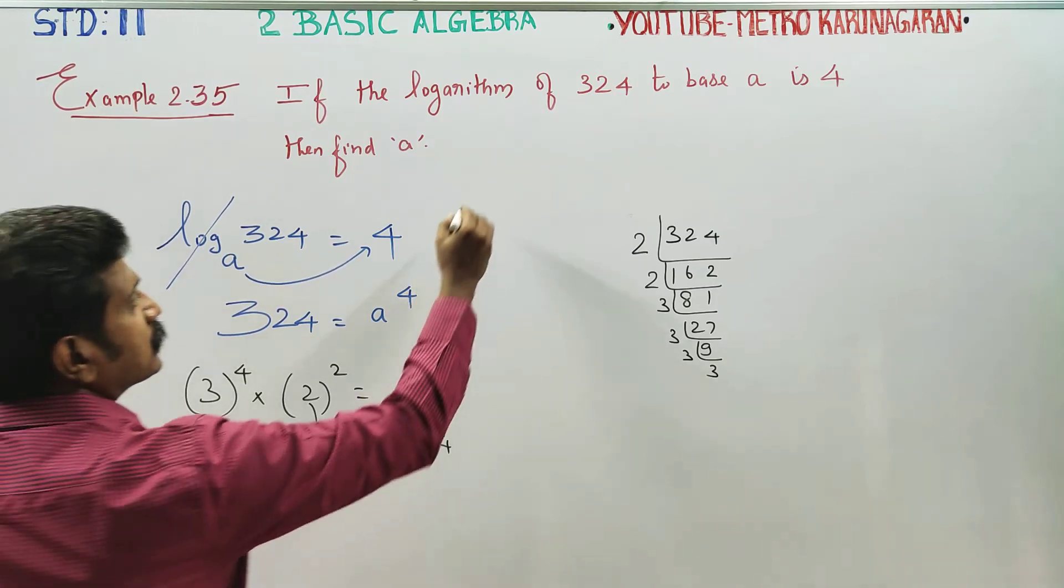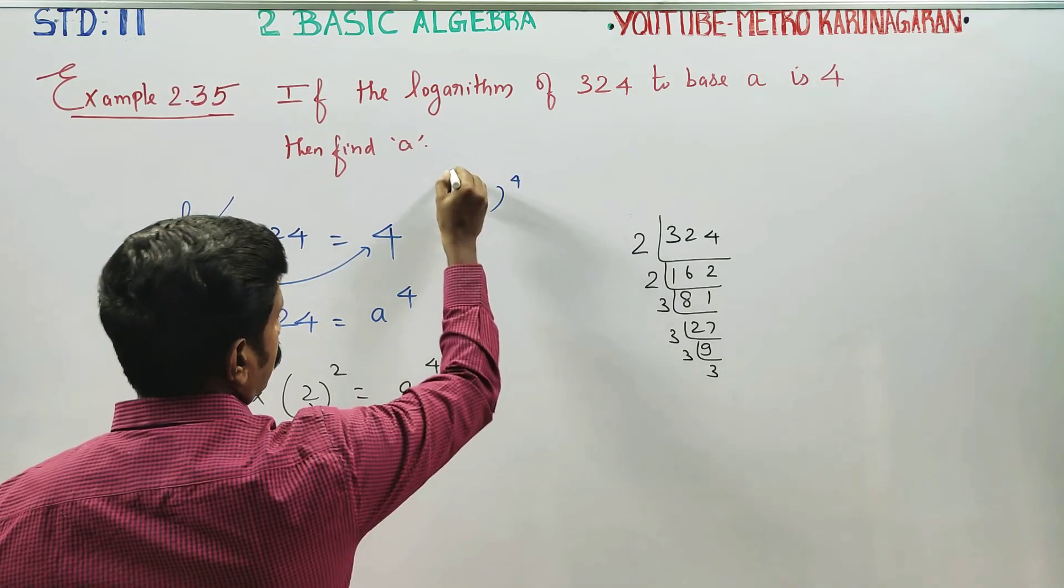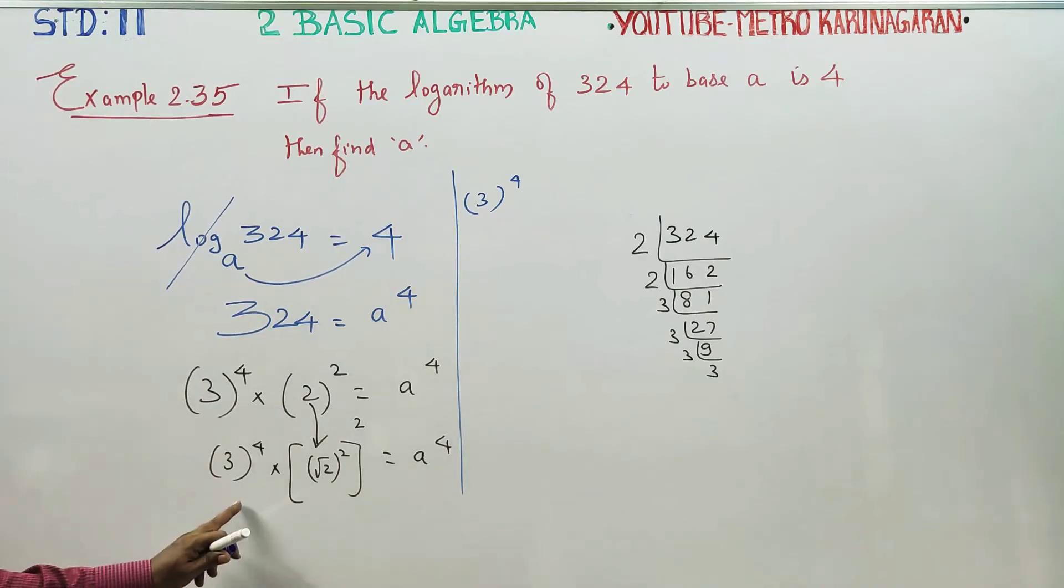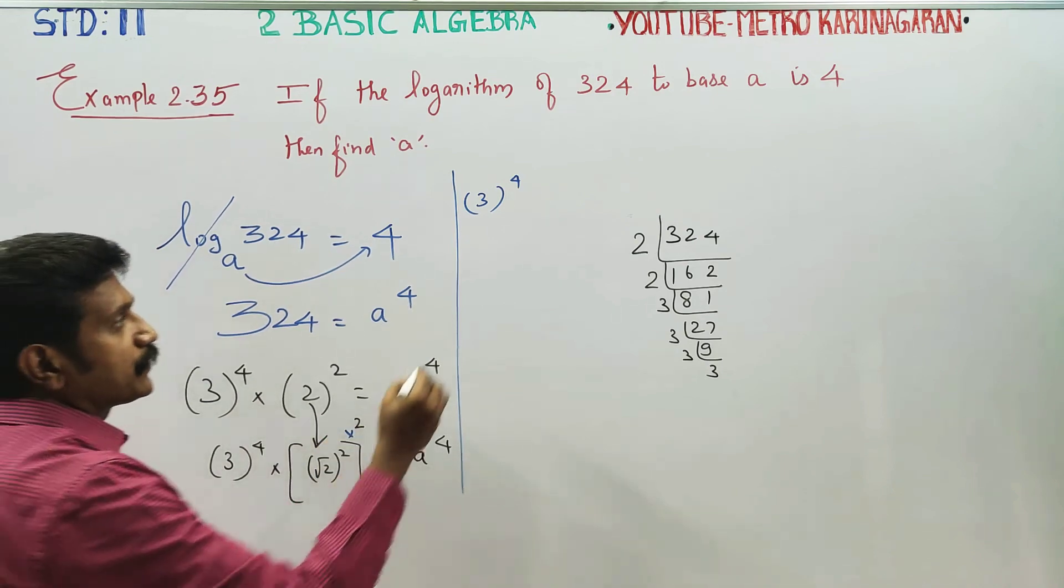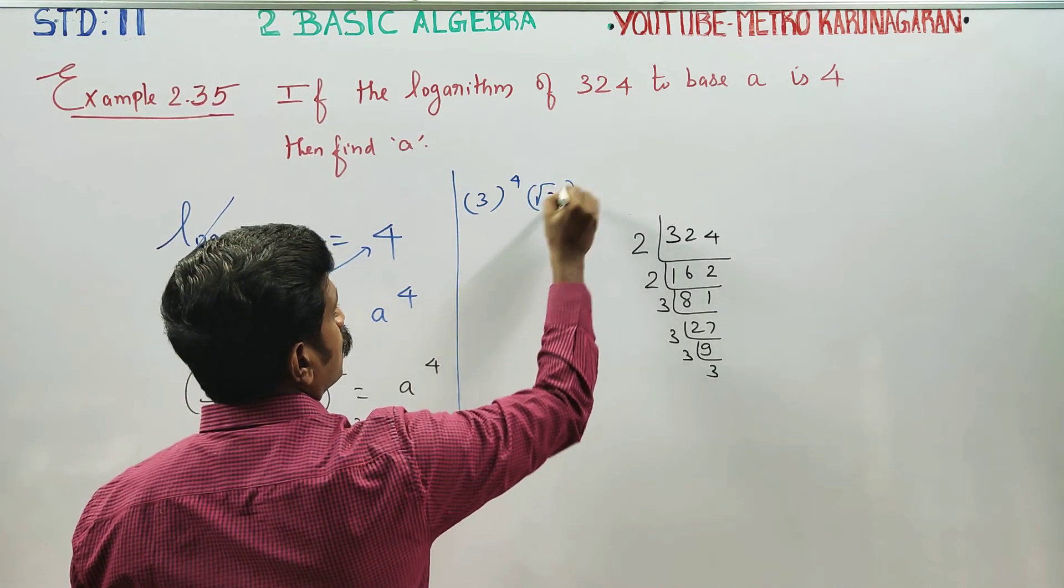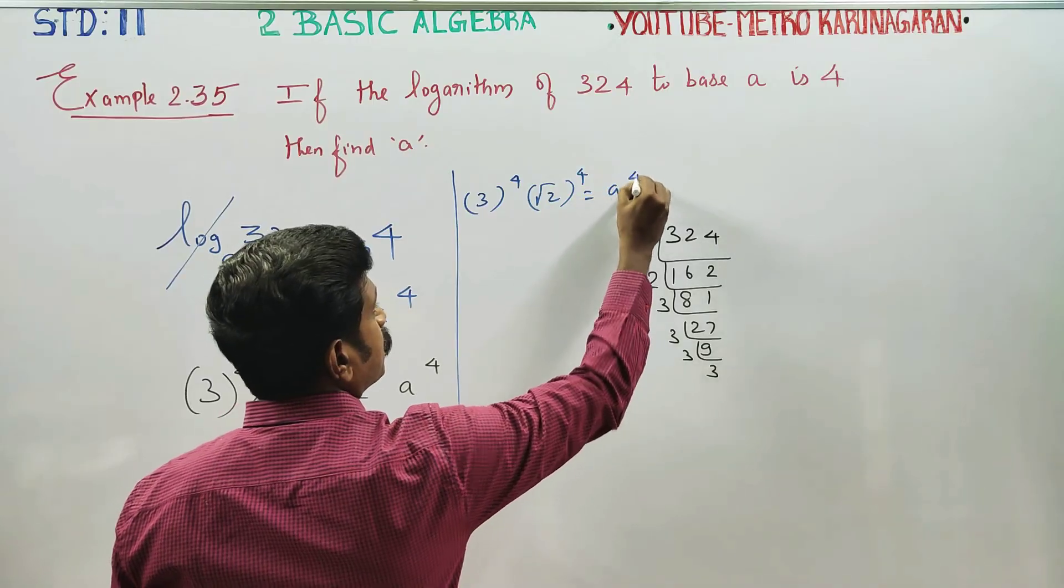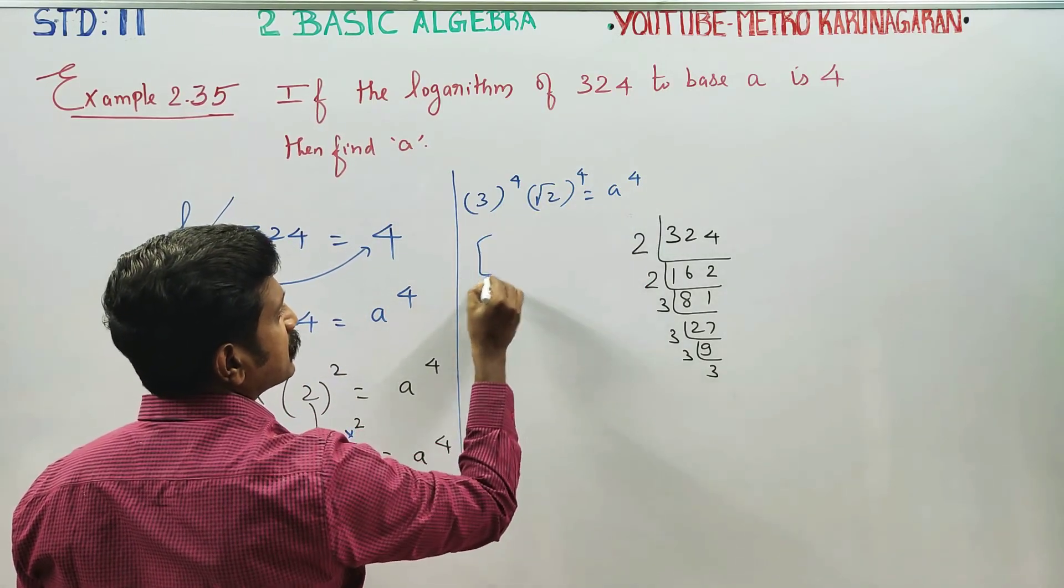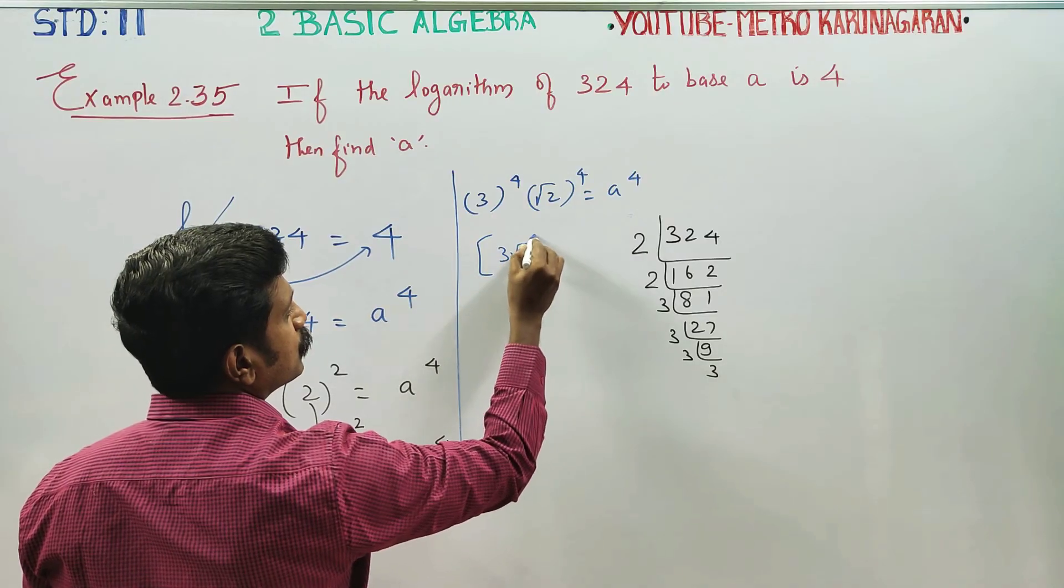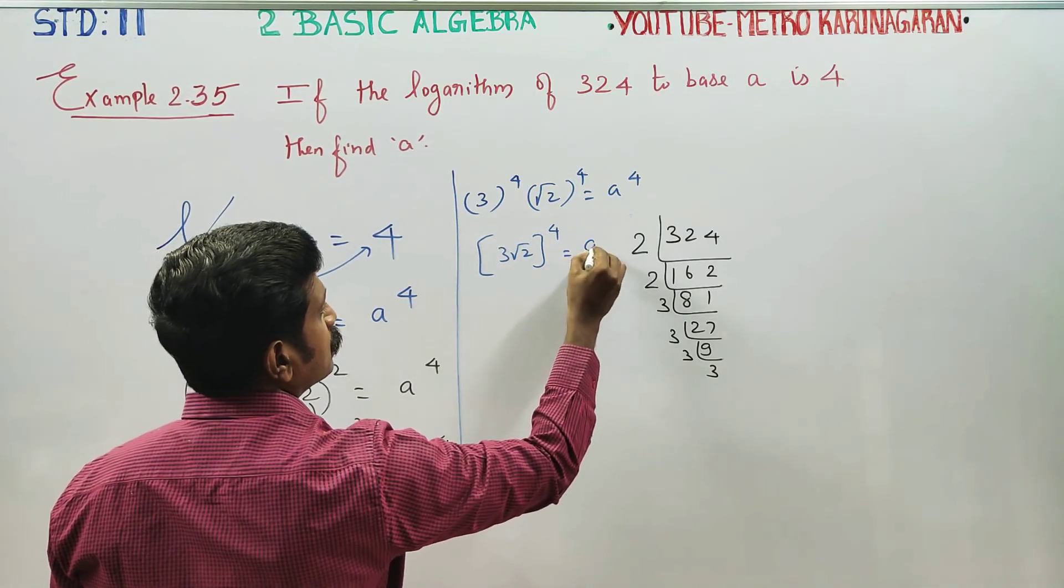Next, 3 power 4, power 2, 2s are power 2. 4 power 4 is equal to A power 4.